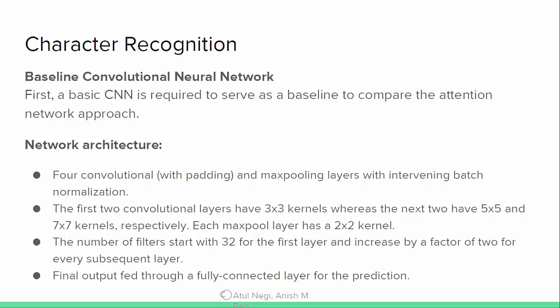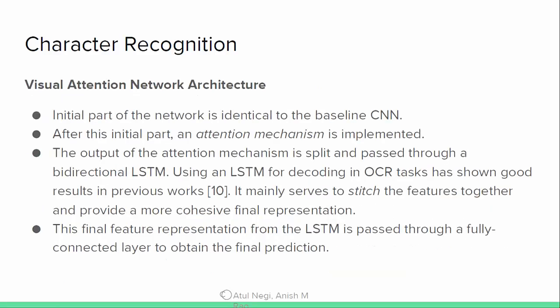First, a baseline convolutional neural network is trained for comparison with the attention model. The baseline has 4 convolutional layers and 6 max pooling layers intervening between them. The convolutional kernels are 2×3 for some and 5×5 and 7×5 for others, and the final max pooling layer is 2×2. This is fed, filtered, and then passed to a fully connected layer for classification.